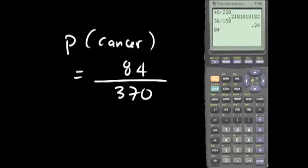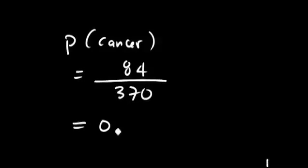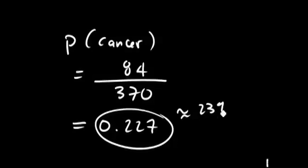Numerically, the answer is 0.227027027, and if we approximate this to the nearest thousandths, we get 0.227. This is approximately 23%. 23% of the people died of cancer in this table.